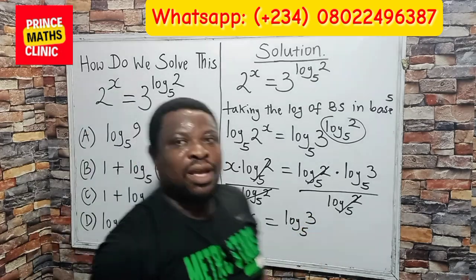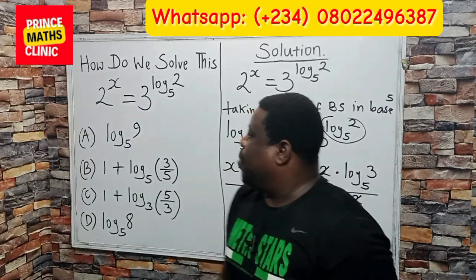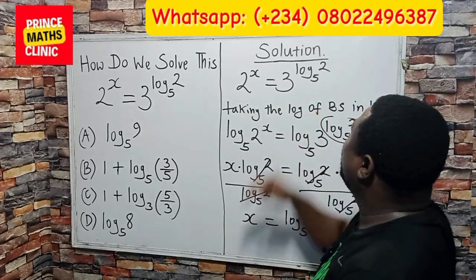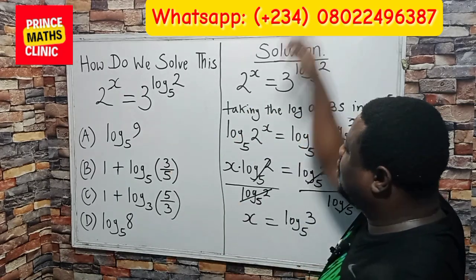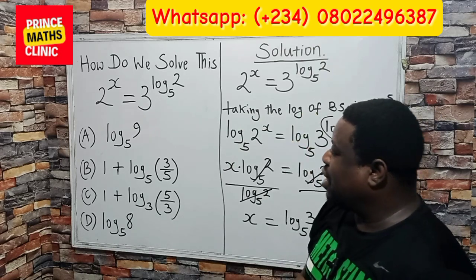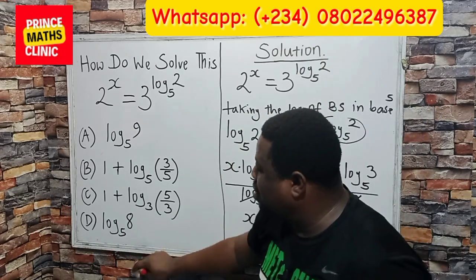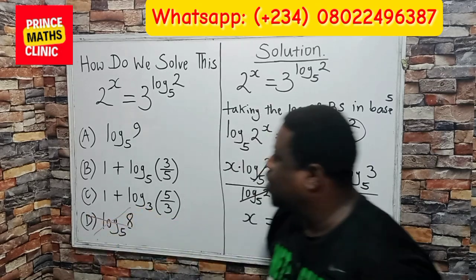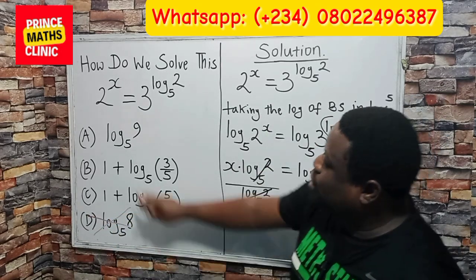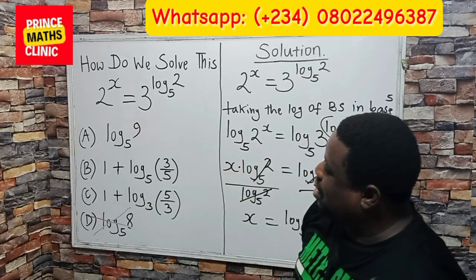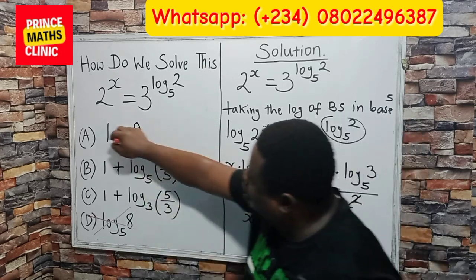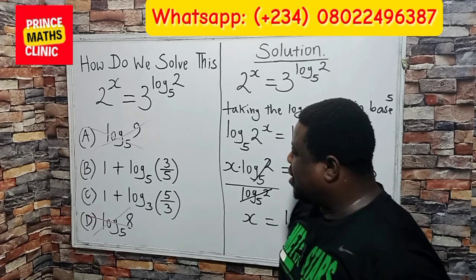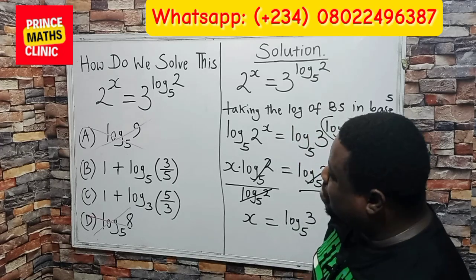That is the value for x. But looking at the options, we have different options here. Certainly, it cannot be d — so d is out. It cannot also be a — so a is out. Then, looking at b and c, let's examine them.